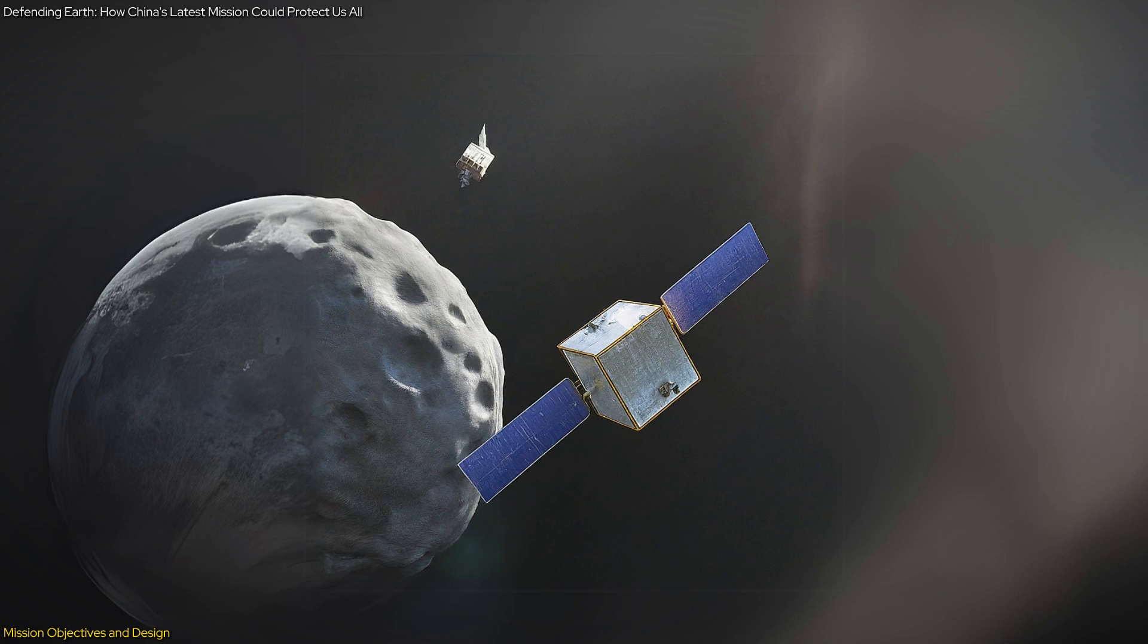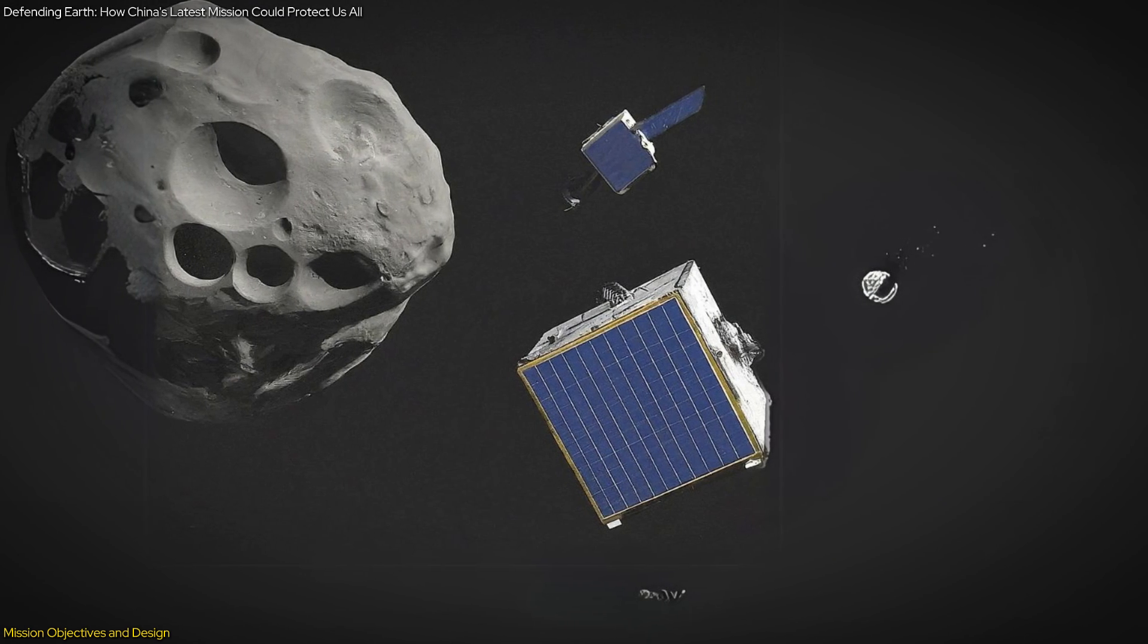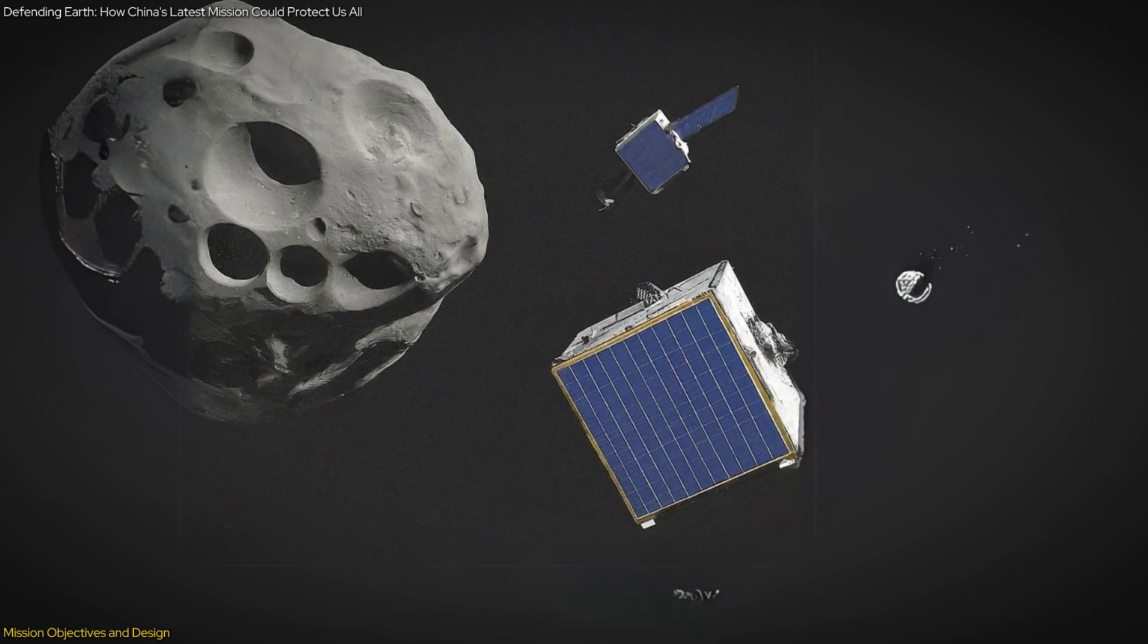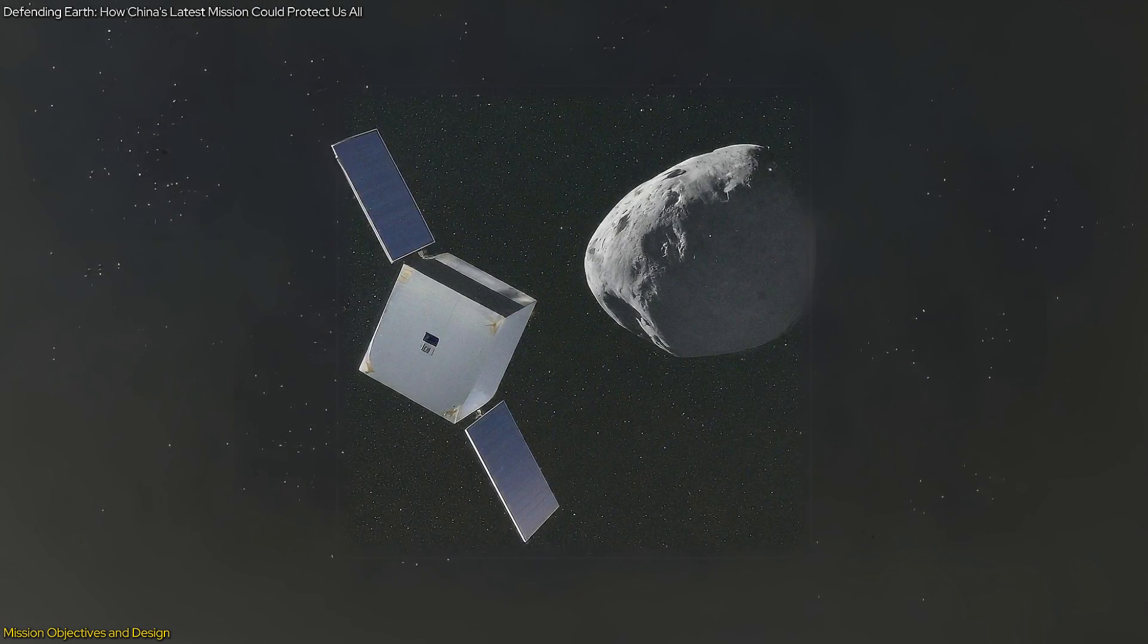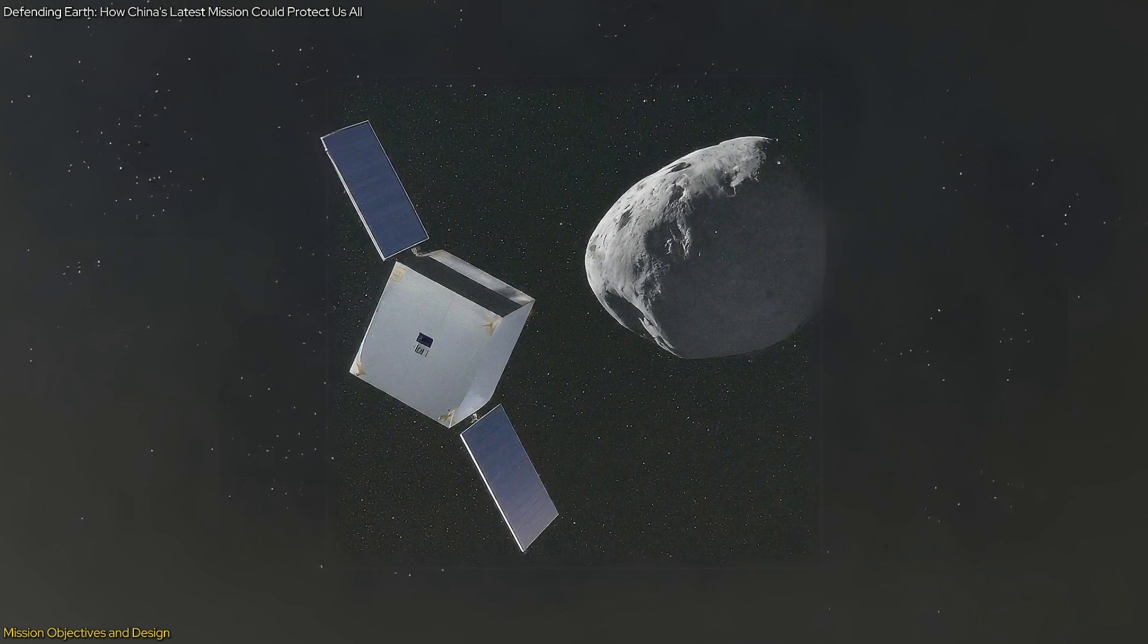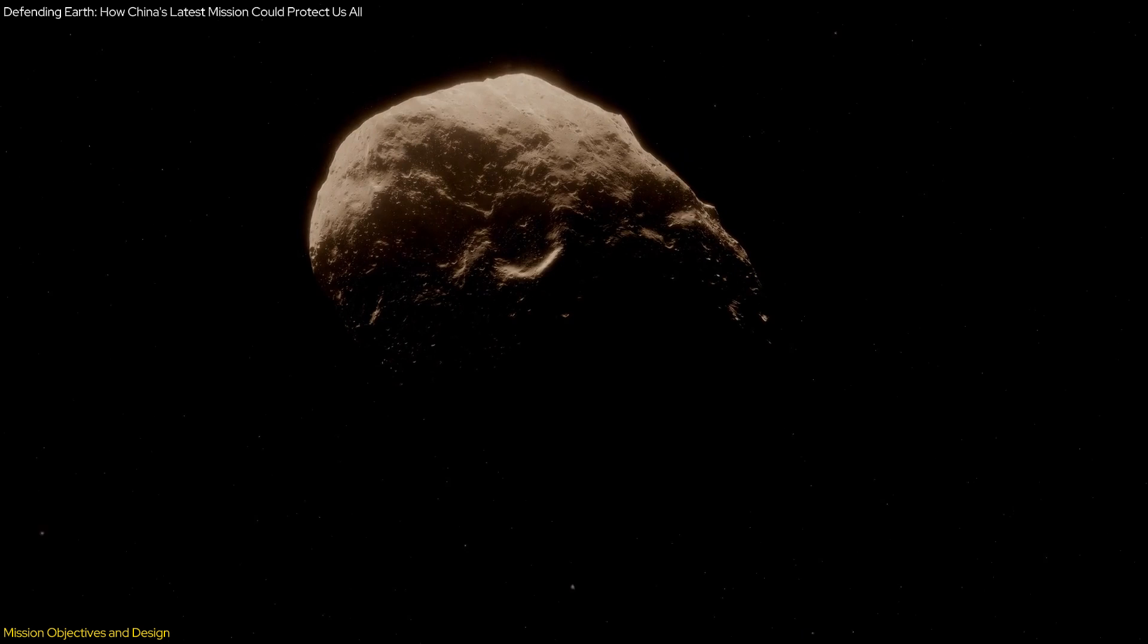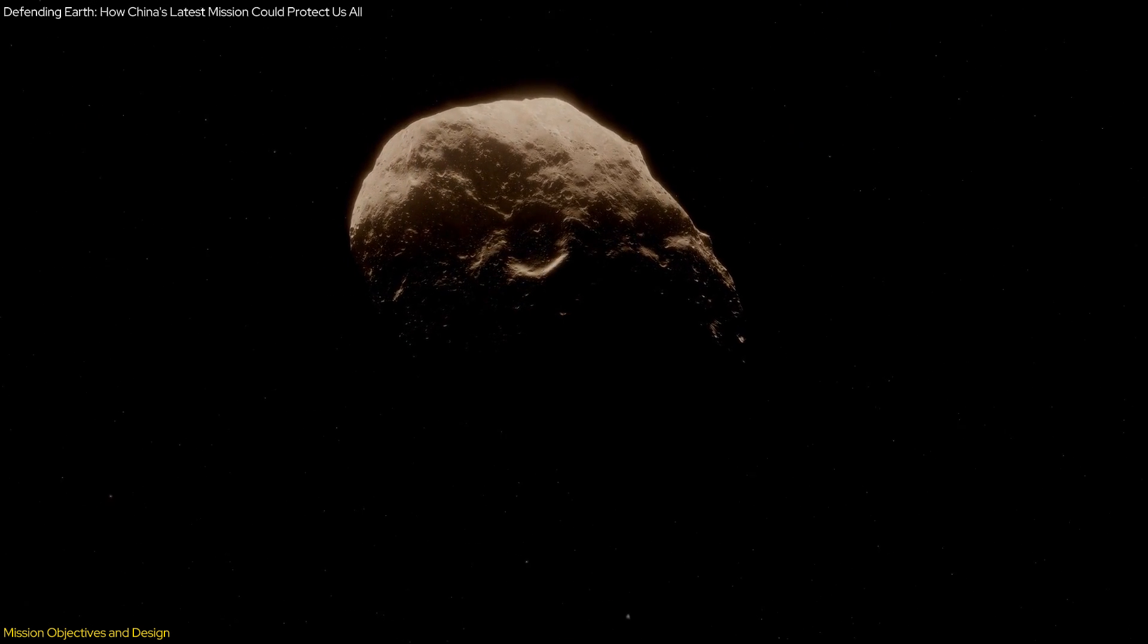Meticulous planning and execution are vital for this mission's success. The mission planners must select optimal launch windows and trajectories for both spacecraft. The observer spacecraft may use gravity assists to optimize its path, ensuring it reaches the asteroid ahead of the impactor. This strategic approach is designed to maximize scientific return and ensure that the mission's objectives are met effectively.